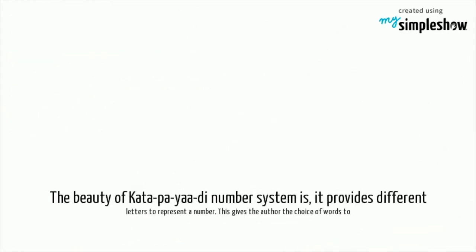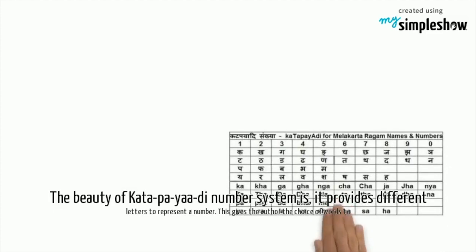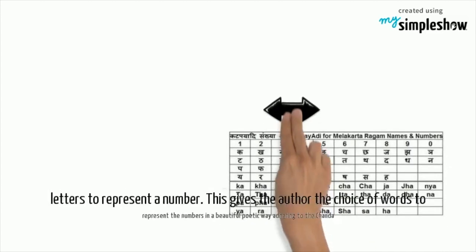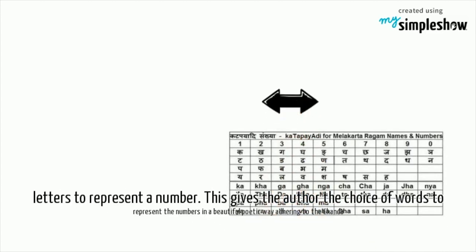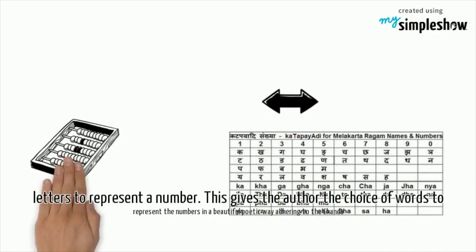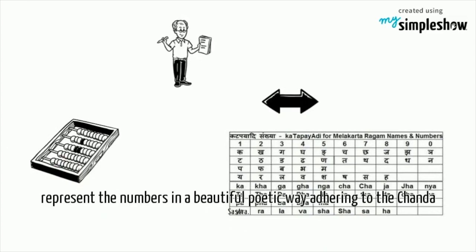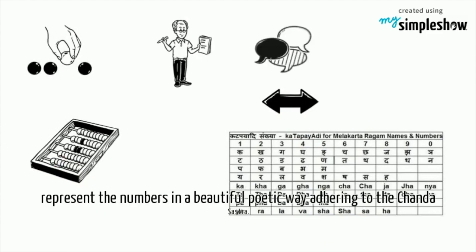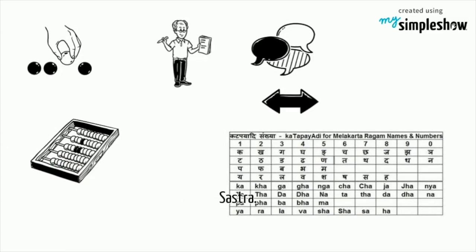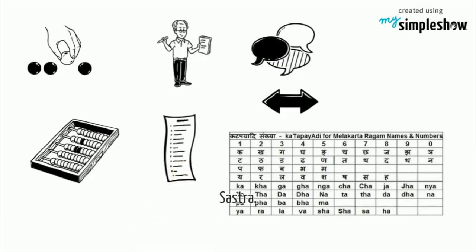The beauty of the Kata Piyadi number system is that it provides different letters to represent the same number. This gives the author the choice of words to represent numbers in a beautiful poetic way, adhering to the Chanda Shastra.